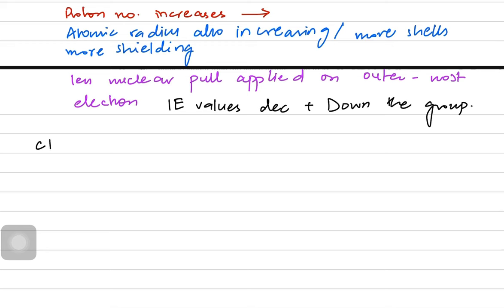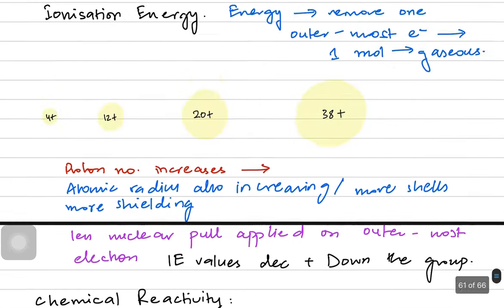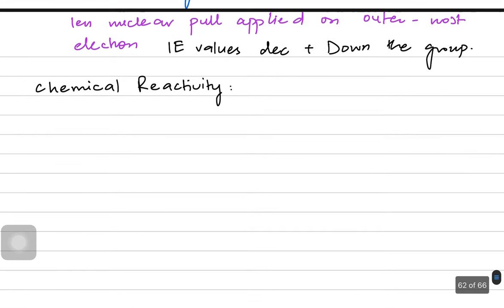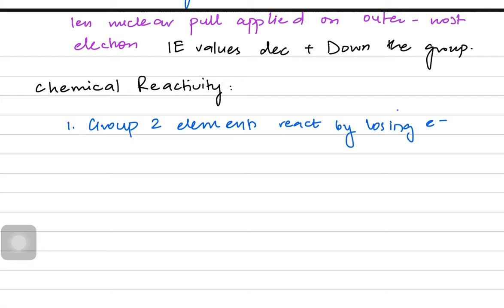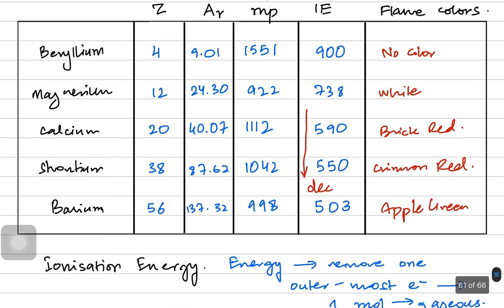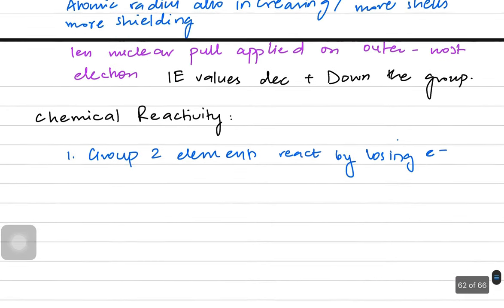Let's talk about chemical reactivity, which is an interesting concept we'll be asked to explain. Group 2 elements react by losing electrons, and losing electrons is easier for barium and strontium than for beryllium and magnesium. As ionization energy decreases down the group...